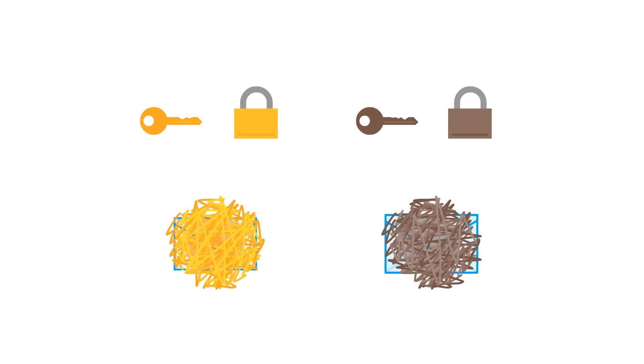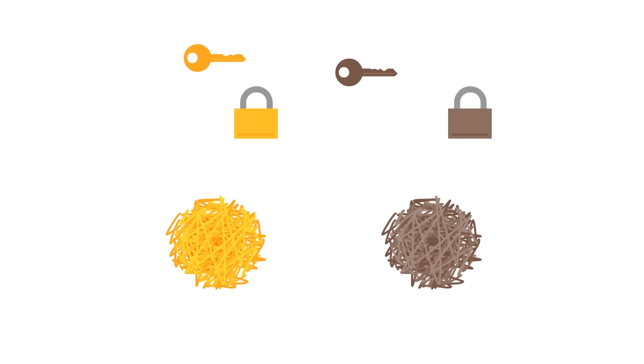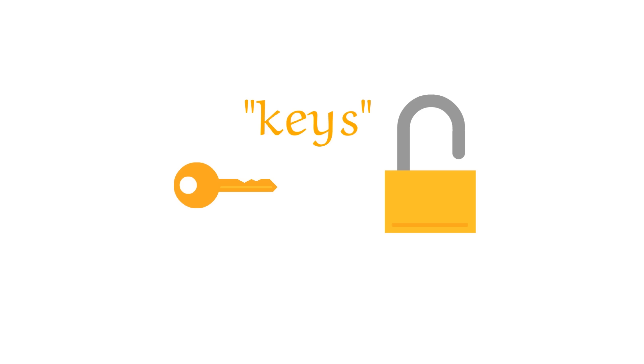These keys always come in pairs. One of them can only scramble, and the other can only unscramble messages that were scrambled by the first one. Calling both these numbers keys might be a bad analogy, since keys can typically both lock and unlock. That's why I'm illustrating them as a padlock and a padlock key, since padlocks can only lock, and the corresponding key can only unlock that specific padlock.